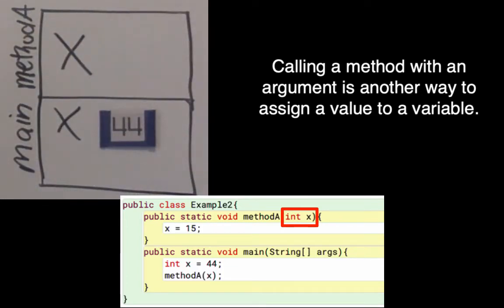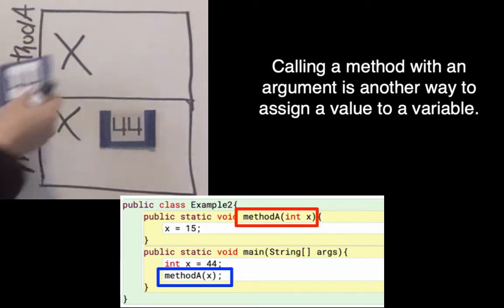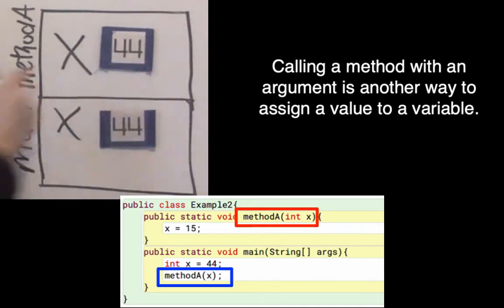And what's the value of that variable? Well, when I called methodA, I passed a copy of whatever was in the x inside my main method. So inside methodA, it's going to get set to the value 44 because it got a copy of what was in the x variable inside my main method.